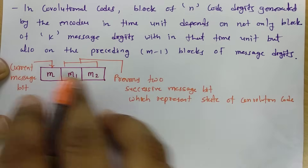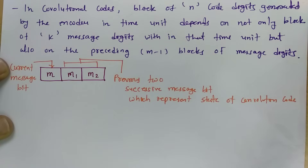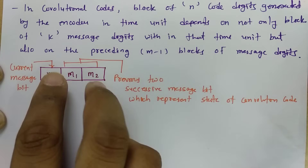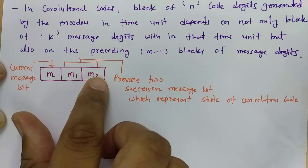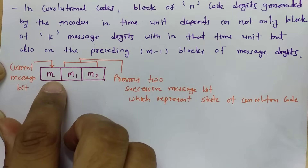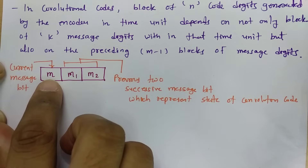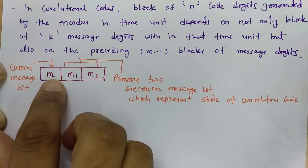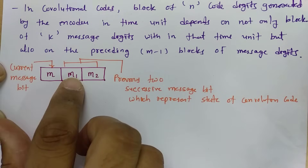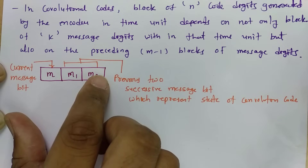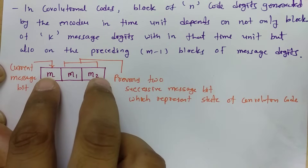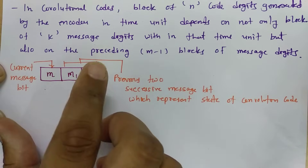Now let's see how this shift register works. Initially, all bits are zero. If I input message bit 1, it enters here as: m=1, m1=0, m2=0. If I then send the next bit which is zero, the 1 shifts to m1, zero enters m, and the previous m2 gets discarded. So the state becomes: m=0, m1=1, m2=0.